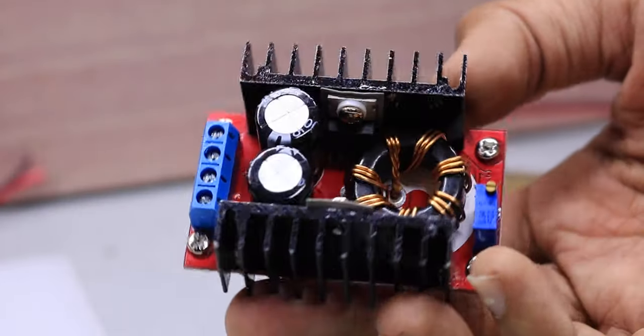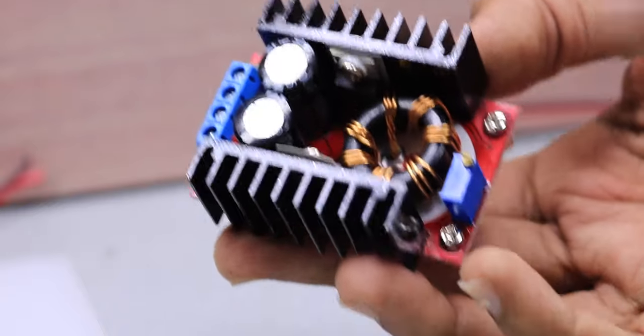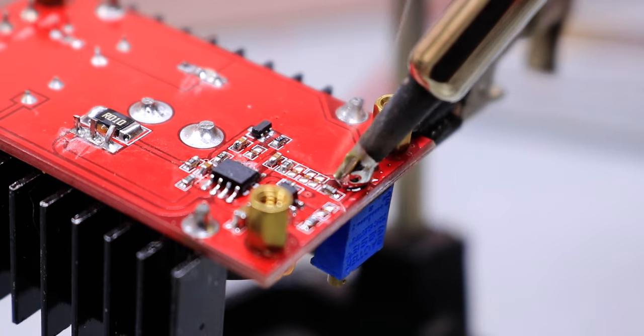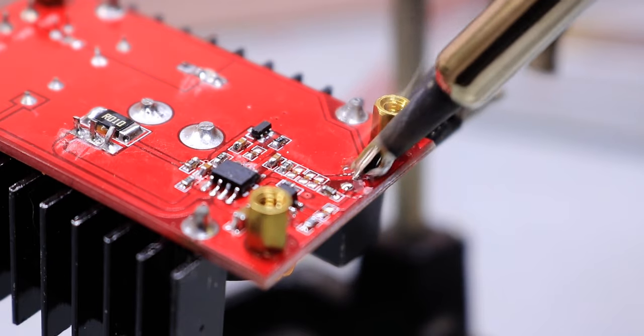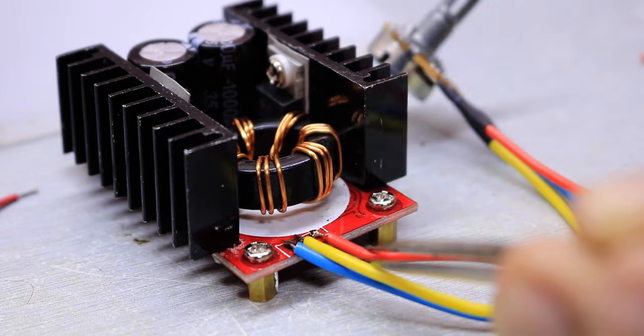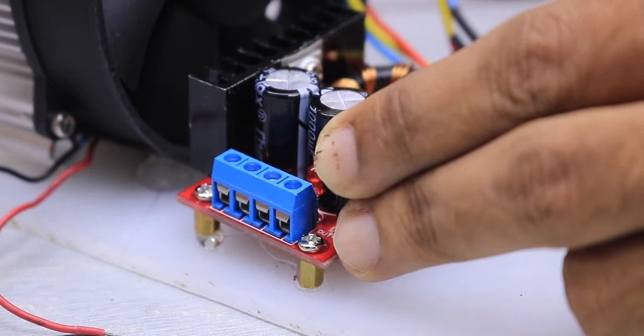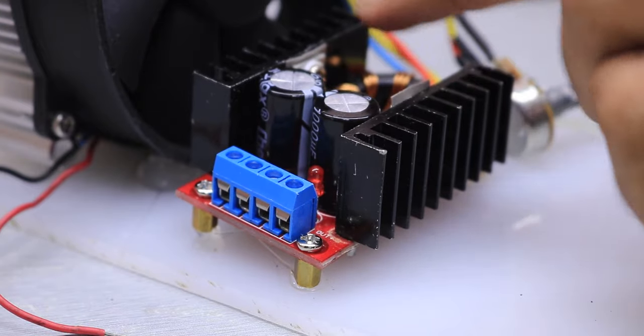Now for controlling the power to the LED we need a circuit with constant current driver, which are required for these high power LEDs. Which are readily available in the market. But before connecting it I removed this tiny potentiometer and replaced it with bigger one of the same value, so it's easier to control. And again using some hot glue I secured it on the acrylic plate.